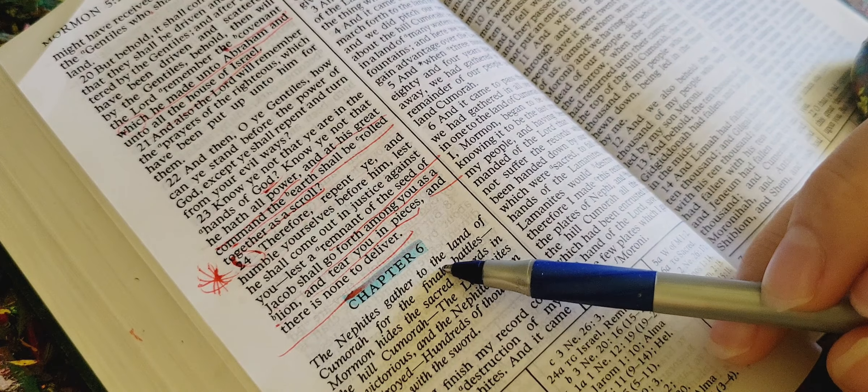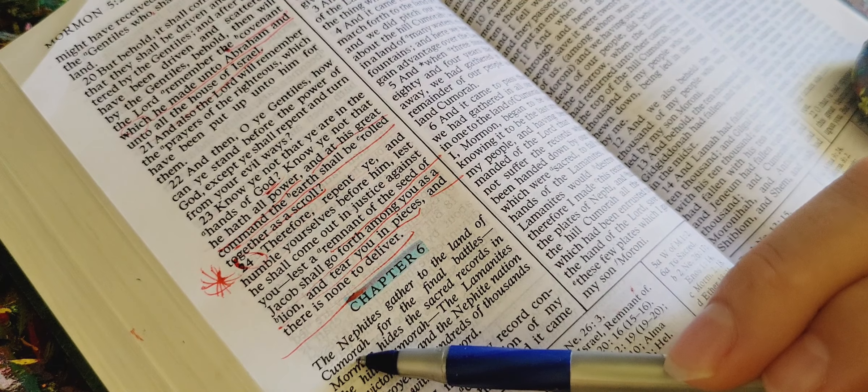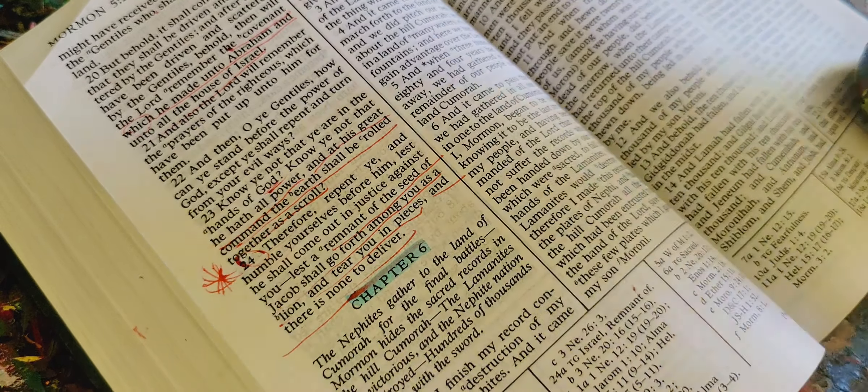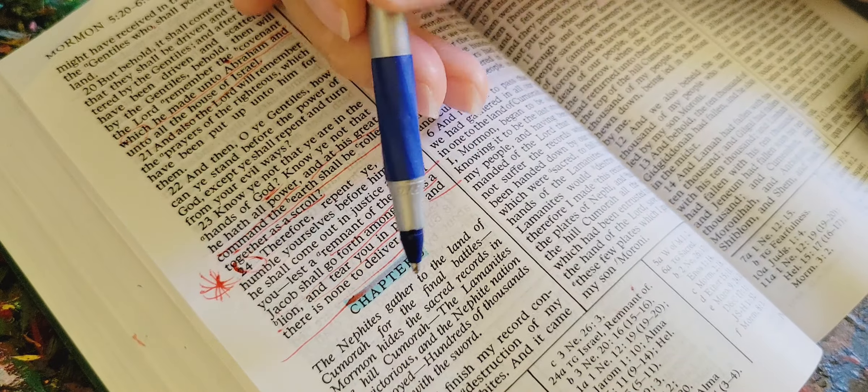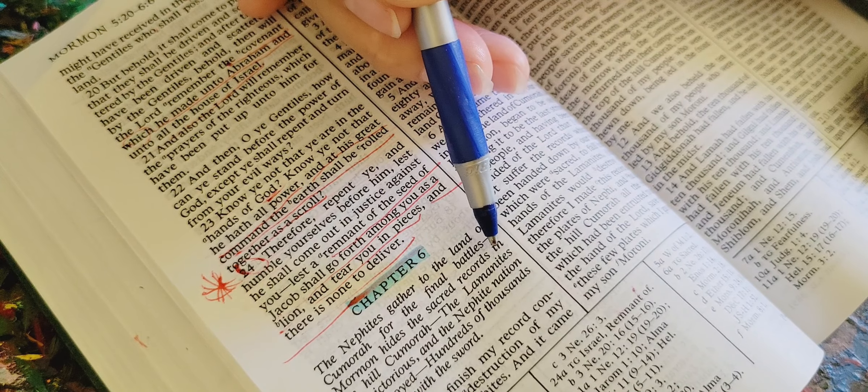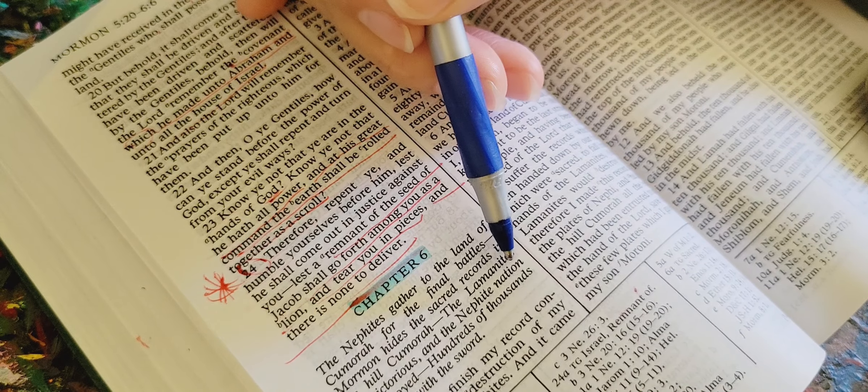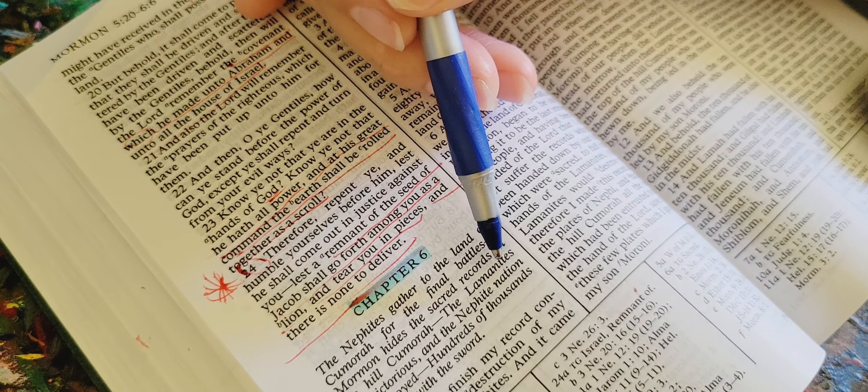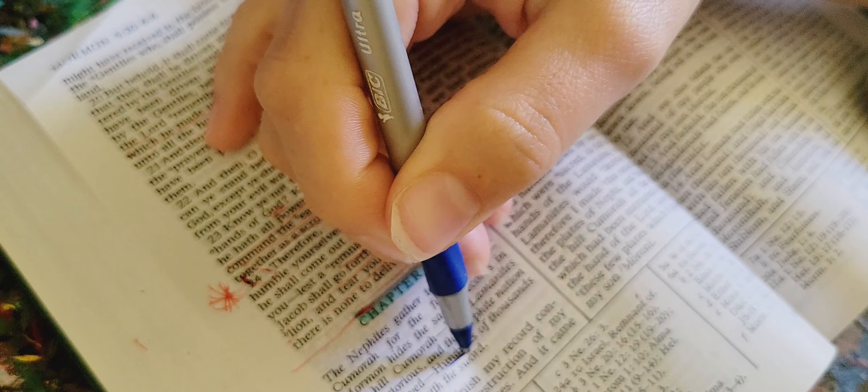The Nephites gather to the land of Kumora for the final battles. Mormon hides the sacred records in the hill Kumora. The Lamanites are victorious and the Nephite nation is destroyed. Hundreds of thousands are slain with the sword. So here, even here, you hear the battles.